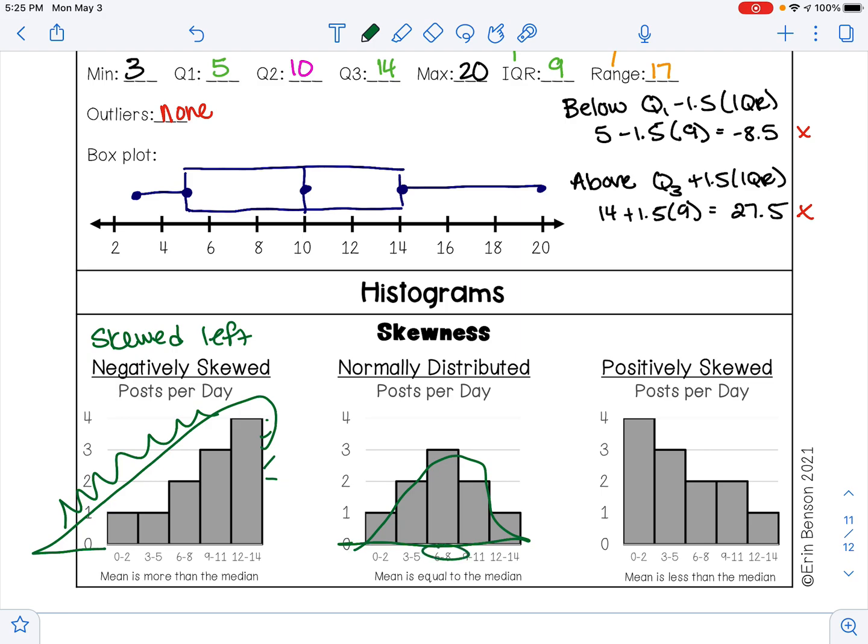And we can also have a positively skewed histogram. Here the mean will be less than the median. And so when you draw your dinosaur, your dinosaur's tail is on the right side of your graph, so that means that this is skewed right.